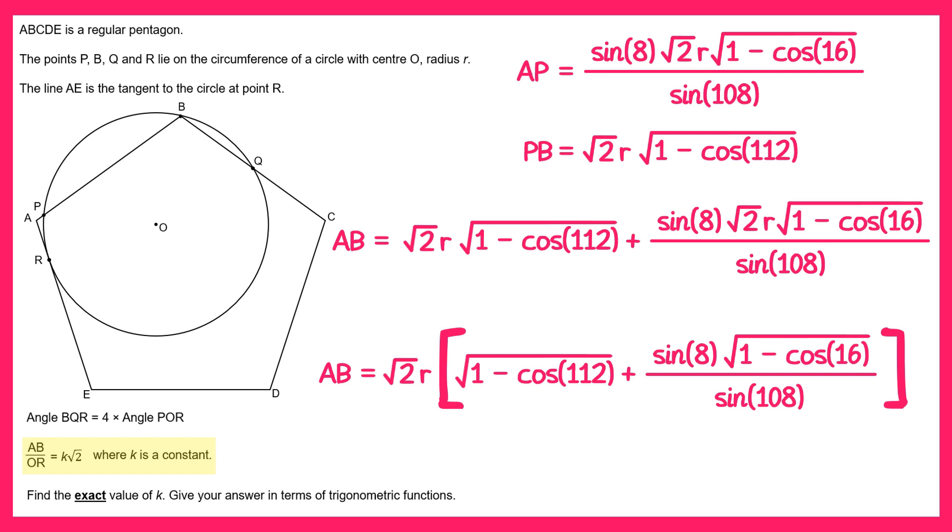And then in the question we need to divide by OR and OR is just a radius so if we divide by OR we can cancel out the R. Now this is in the form square root 2 multiplied by a constant so all of this in the bracket is our constant K. So the answer to the question is that K equals this.